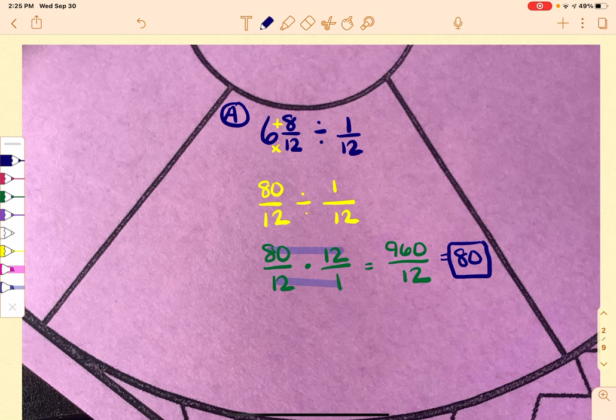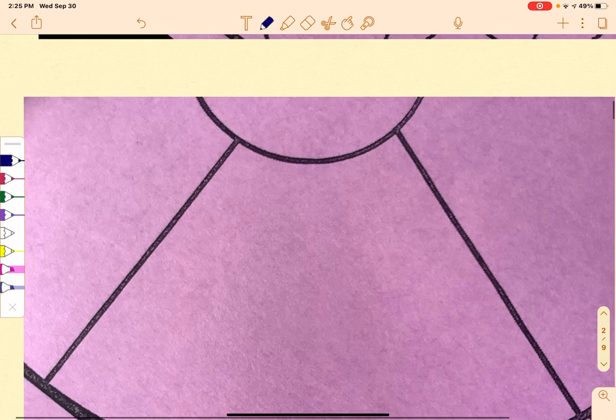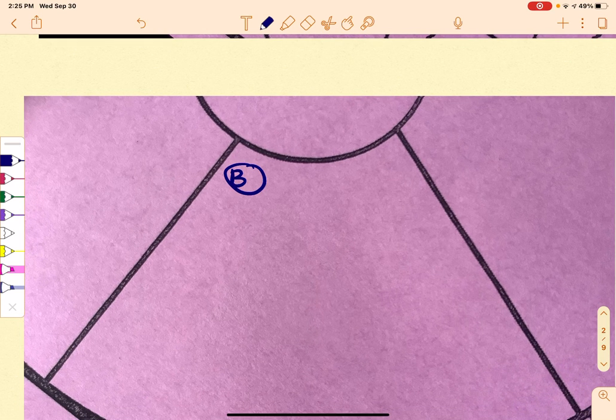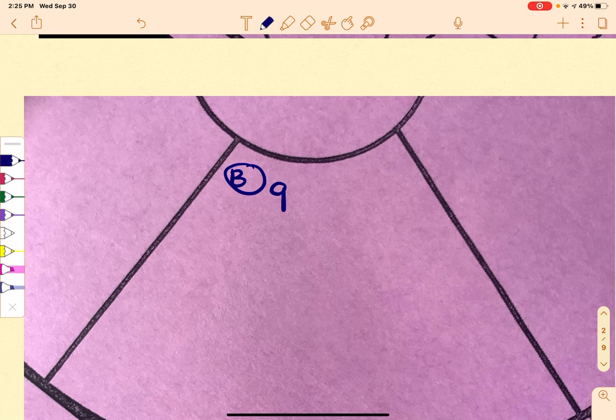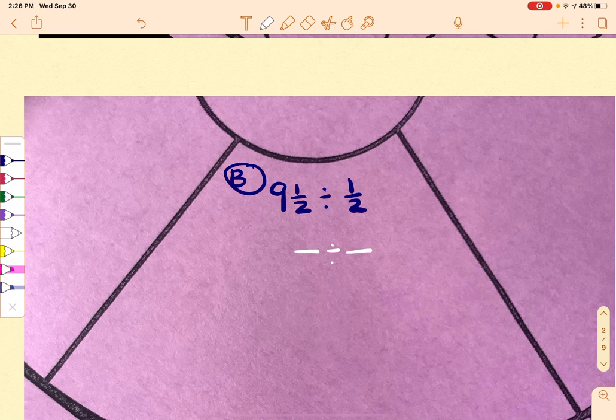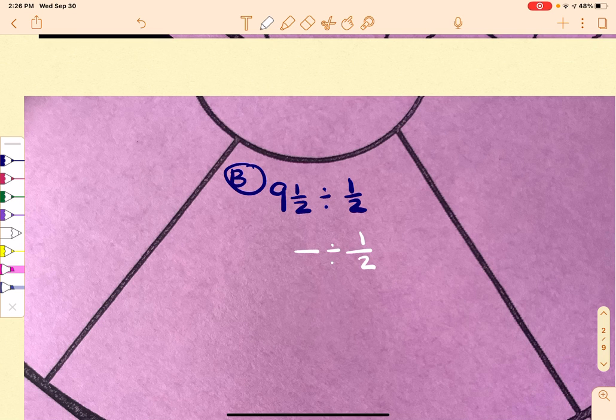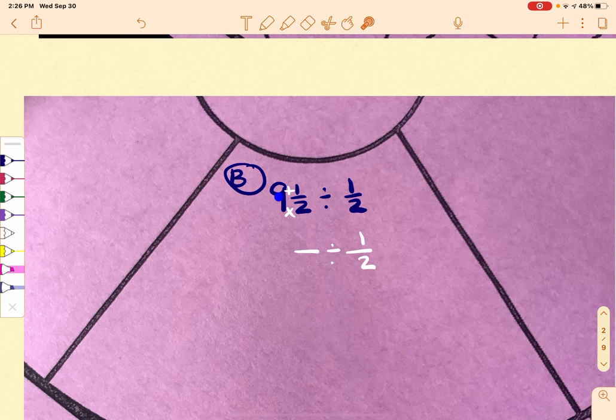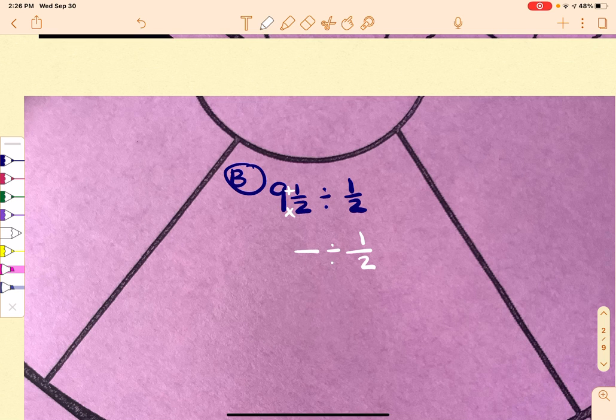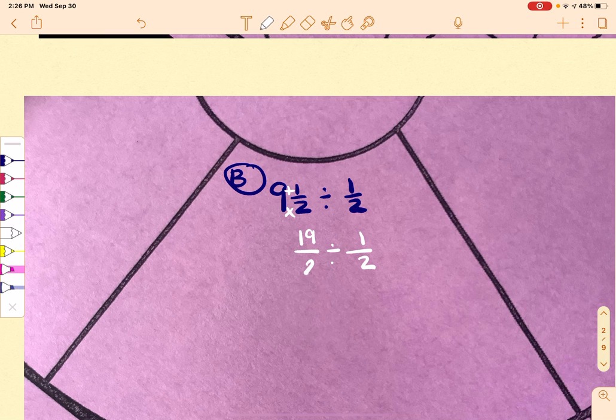Okay, let's keep working our way through these. I want you just to have a variety of examples to use. So here is B. 9 and a half divided by a half. Now like we were saying before, we want these to be two fractions. So the second one's okay. It's in fraction form. But this first one, because it's a mixed number, I'm going to want to take it and put it into improper form.